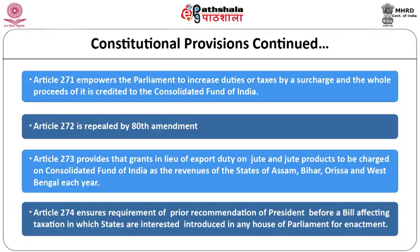There are three lists: the union list, the state list, and the concurrent list. Subjects in the union list empower parliament to impose taxes; in the state list, the state legislature is empowered to impose taxes. There is no reference to the concurrent list for taxation. Entry 97 in the union list is the residuary powers entry — as happened with service tax, which was imposed by parliament under entry 97.